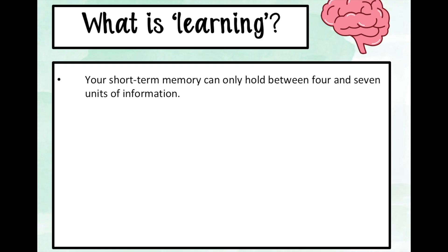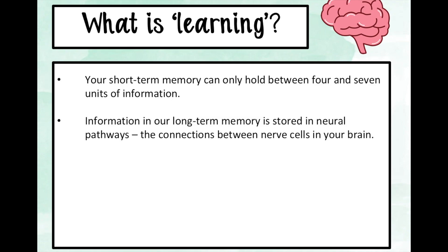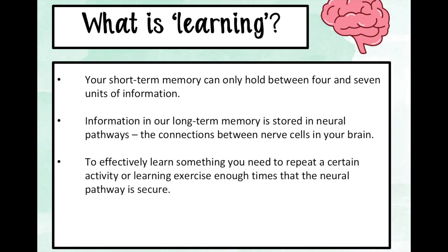Your short-term memory can only hold between four and seven units of information. This is why cramming does not work. Information in our long-term memory is stored in neural pathways — these are connections between nerve cells in your brain. To effectively learn something and move it from your short-term memory to your long-term memory, you need to repeat a certain activity or learning exercise enough times that the neural pathway is secure.